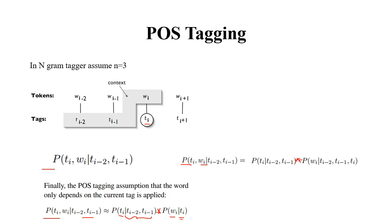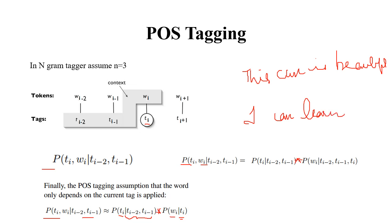For example, in 'This can is beautiful' versus 'I can learn NLP,' we need to find the appropriate tag for the word 'can.' In the first sentence, 'can' represents a noun. In the second sentence, 'can' represents a modal verb. To differentiate, we check the previous words — the context — as discussed. This demonstrates how the trigram model helps disambiguate word senses.